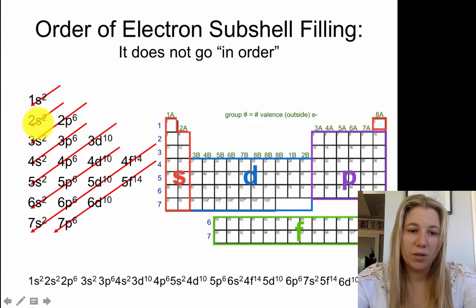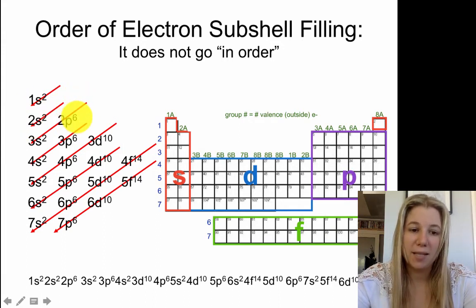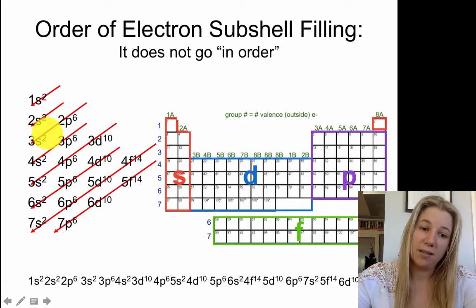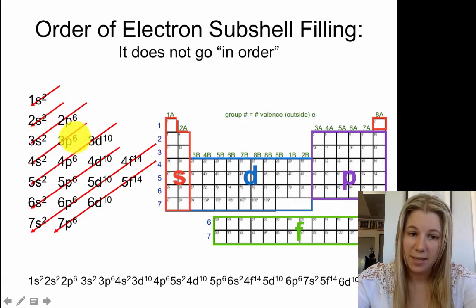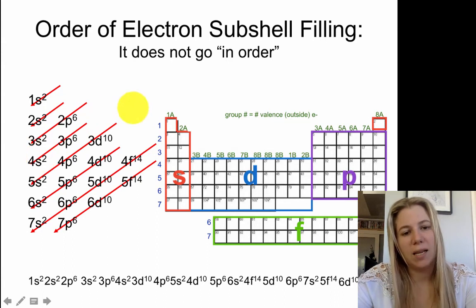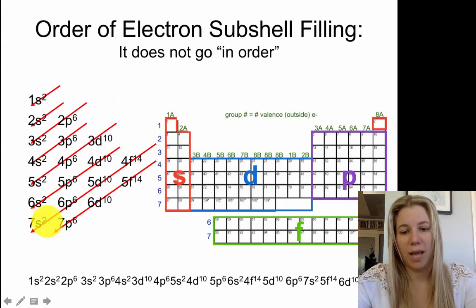Then we go to 2s2. Then we fill it up from 2p6. And then we jump to 3s2 and then 3p6. So you can see that it's filled up diagonally on this little model that we have here.